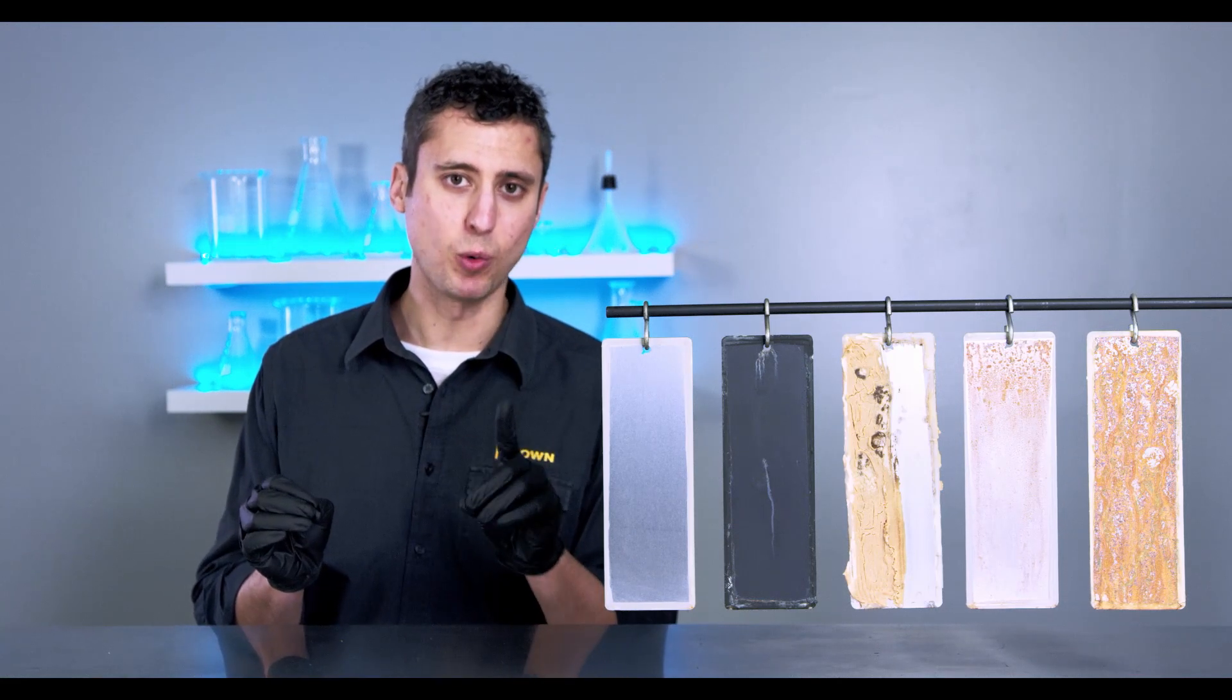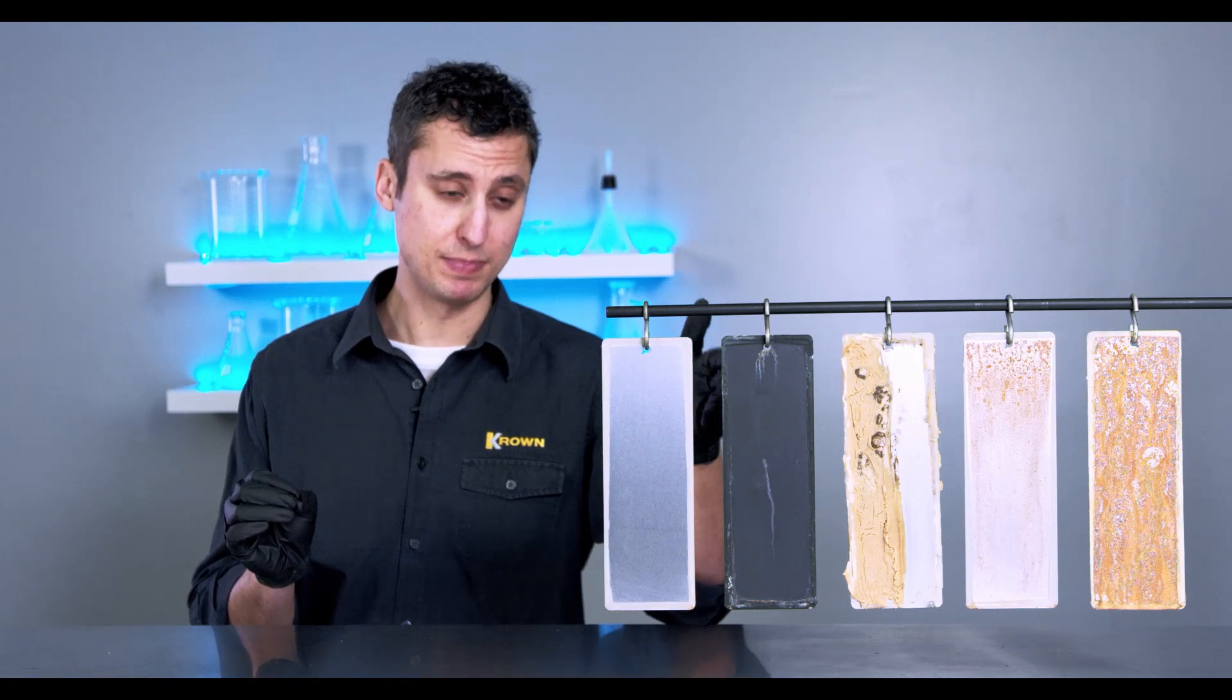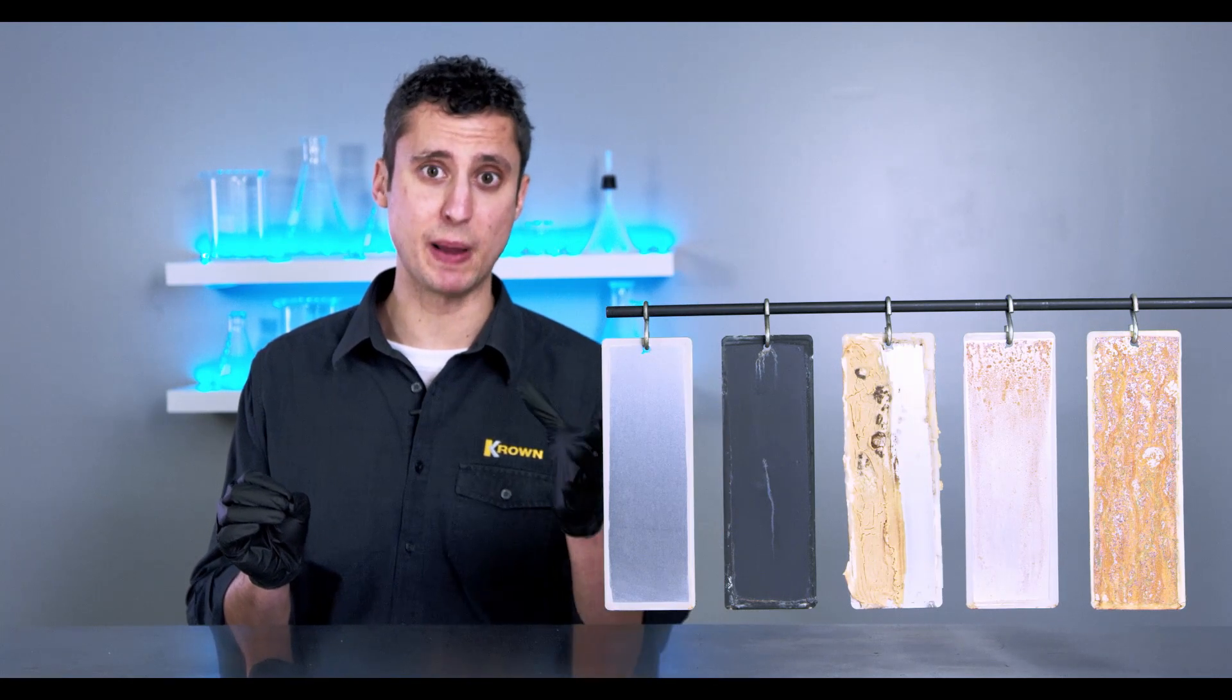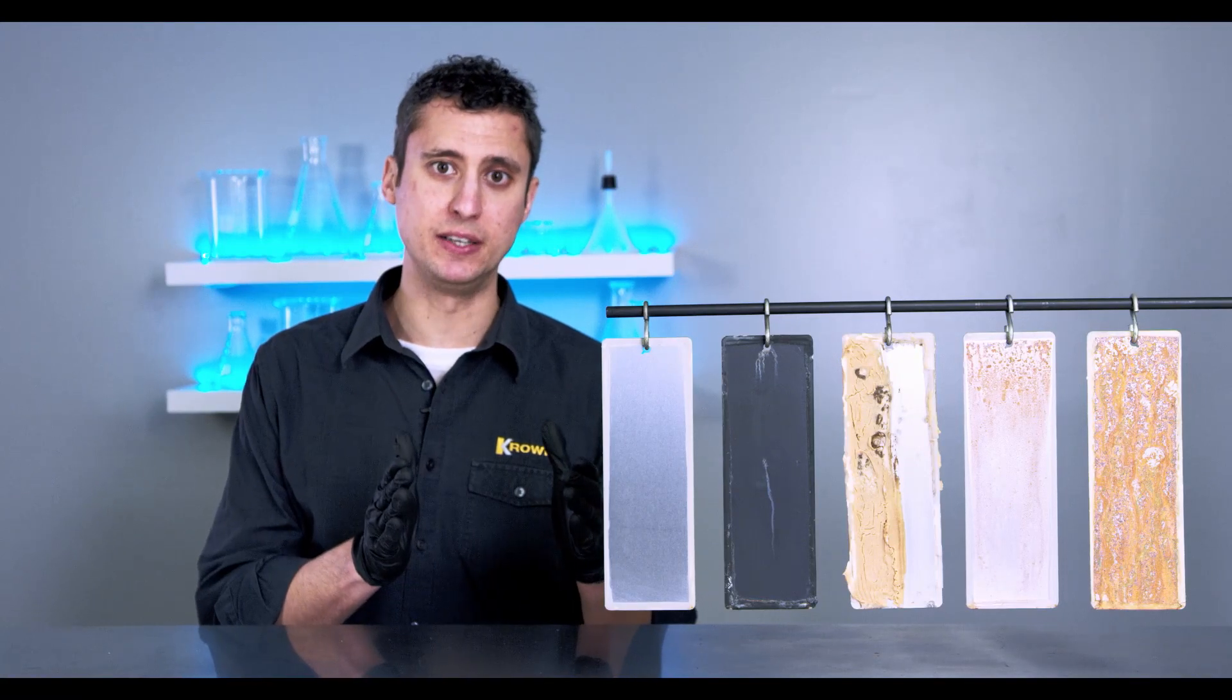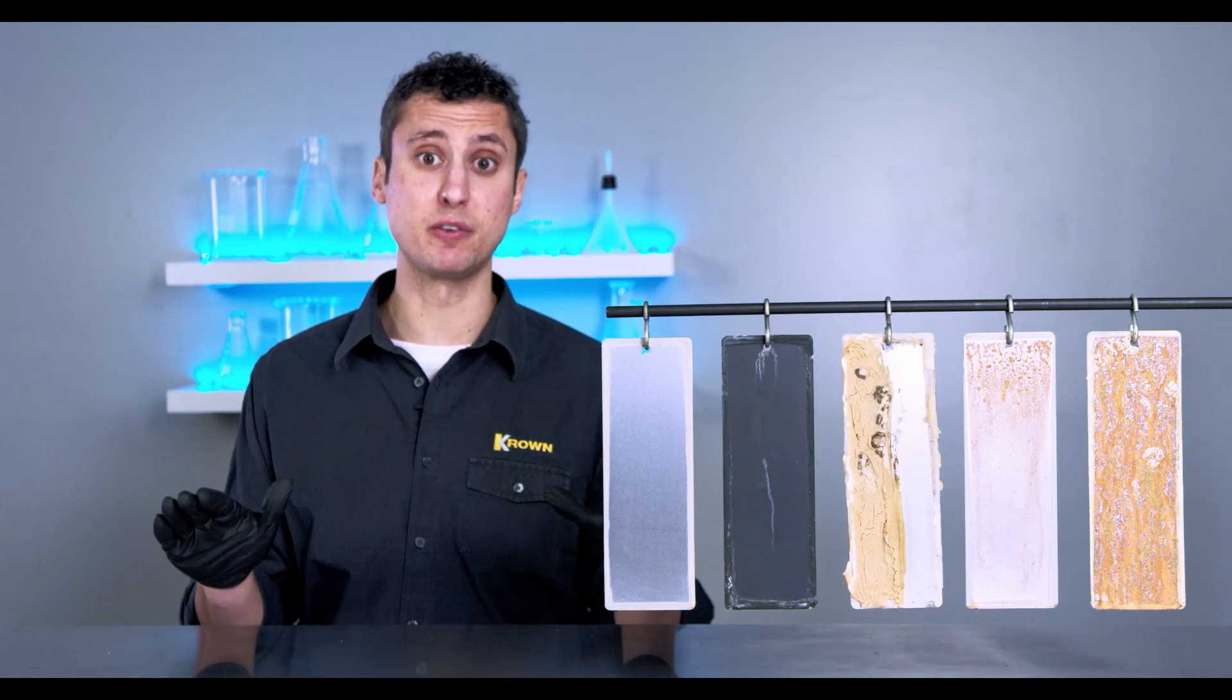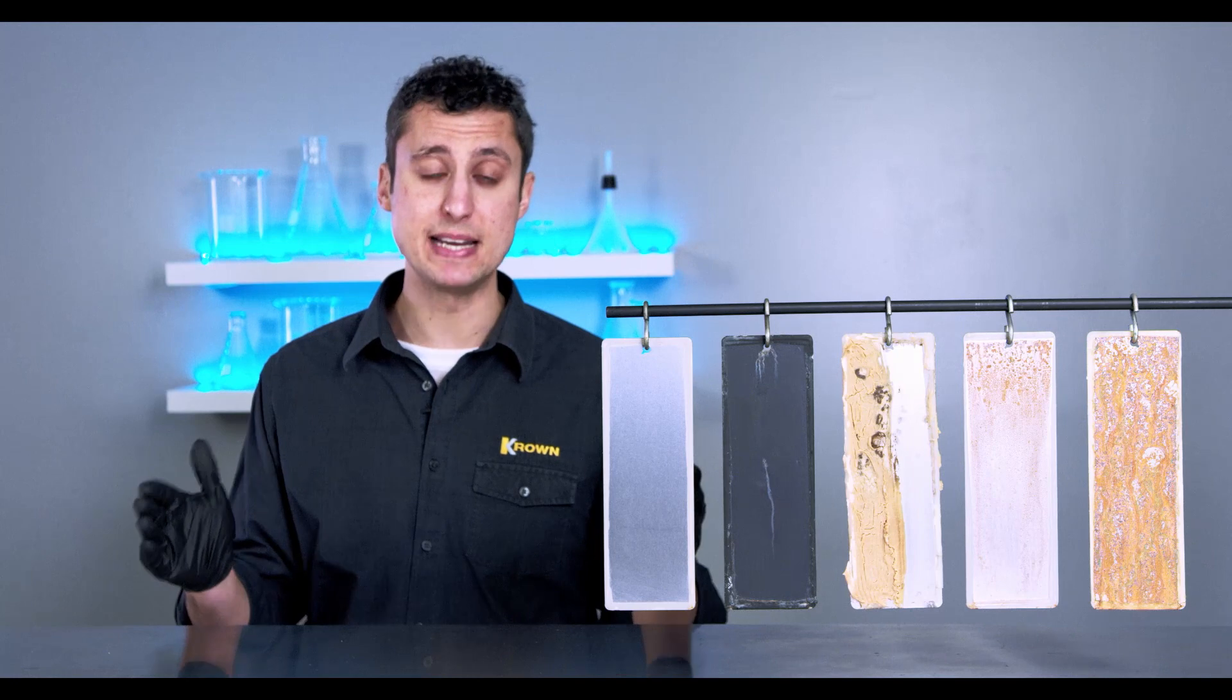Now why is that important to keep in mind? Well, a coating like panel number four, for instance, that rust paint, would be an effective way at preventing corrosion on your vehicle if the entire surface of your vehicle was just one flat piece of metal. But the reality is, how much of your vehicle is actually flat?